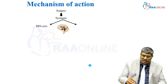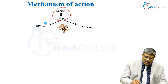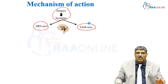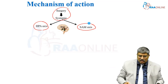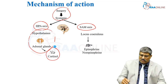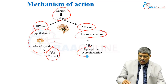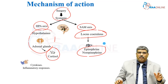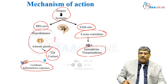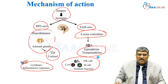Coming to the systemic effects: when you have surgery, the stress of surgery activates two axes — one is the hypothalamus-pituitary axis and the other is the sympathetic-adrenal medullary axis. The hypothalamus-pituitary axis stimulates the adrenal gland to release cortisol, while the sympathetic nervous system causes release of epinephrine and norepinephrine via the locus coeruleus. There is also an inflammatory response where cytokines rise and immune function decreases, mediated via T cells, B cells, and natural killer cells.